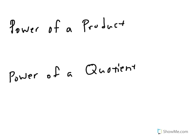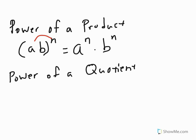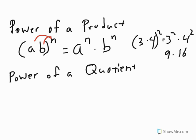Now we can take a look at the power of a product and power of a quotient property — these are ones that we only look at in exponent form. For the power of a product, a times b to the power of n is equal to a to the power of n times b to the power of n. You are distributing the power. With numbers, 3 times 4 squared would equal 3 squared times 4 squared, or 9 times 16, or 144.